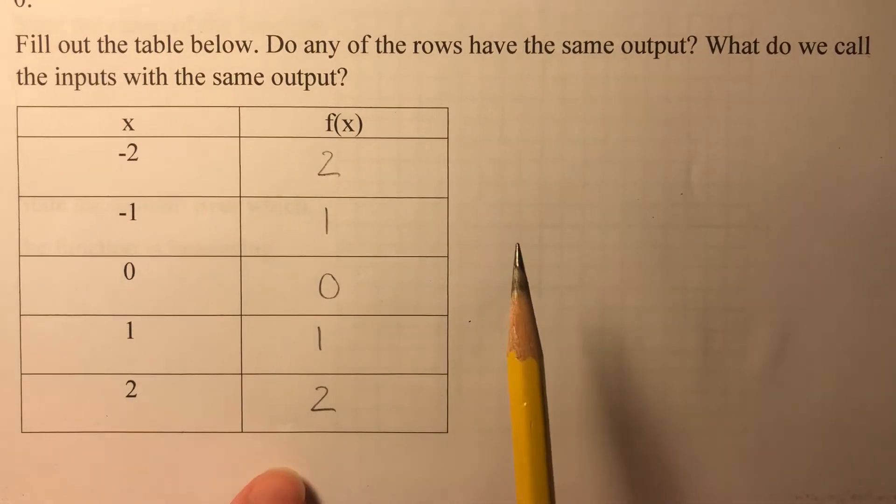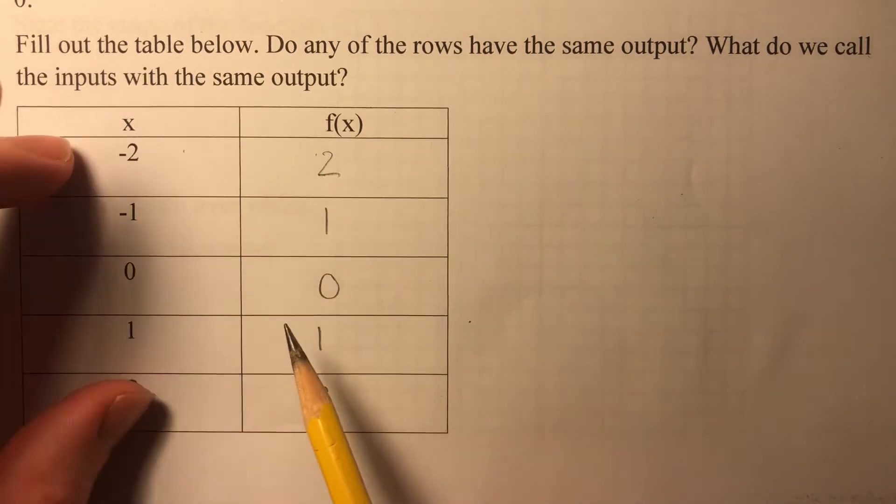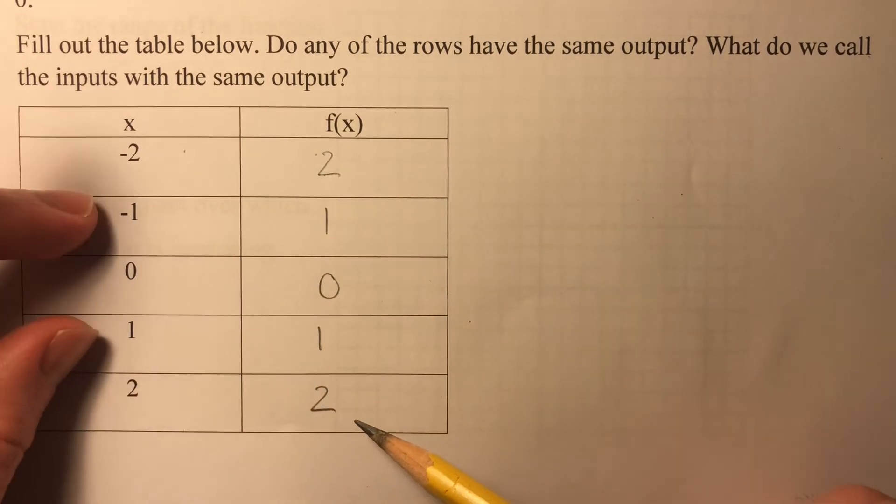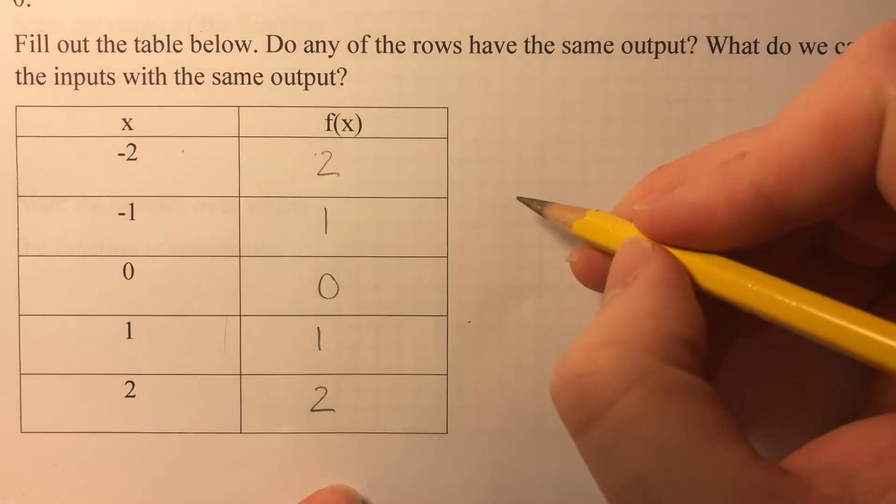What do we call numbers like negative 2 and 2? They both have the same output of 2. Negative 1 and 1 both have the same output of 1. Well, those are known as additive inverses.